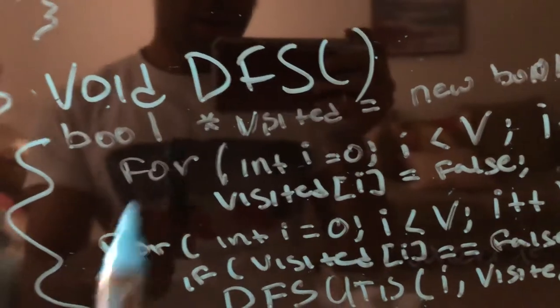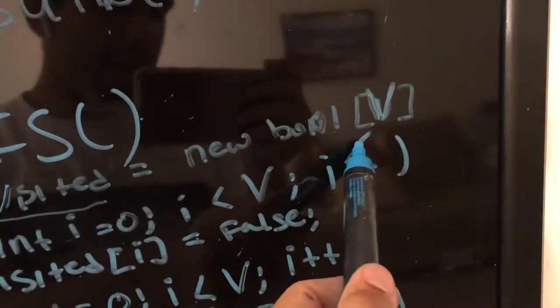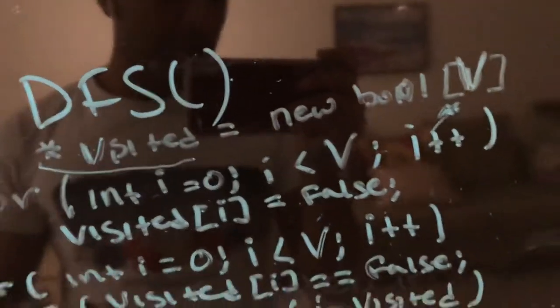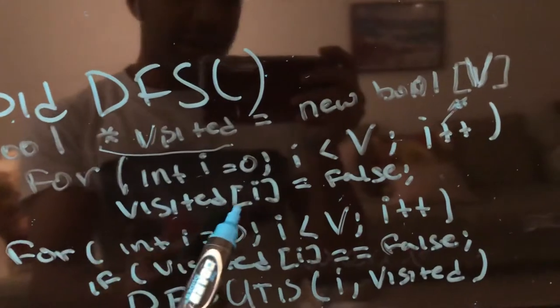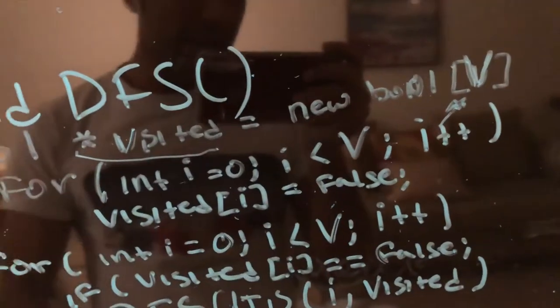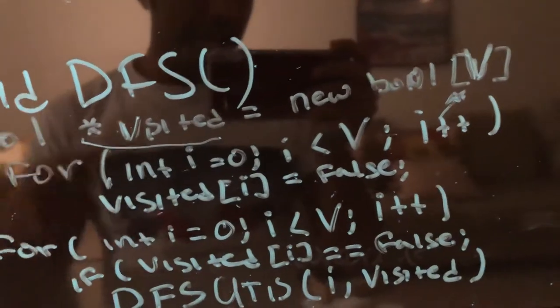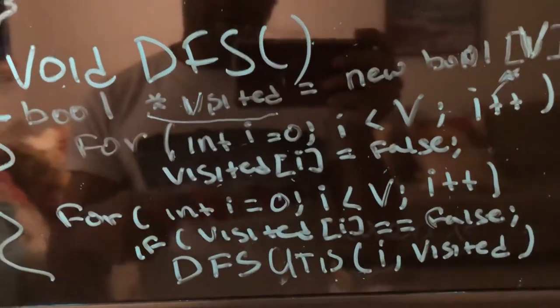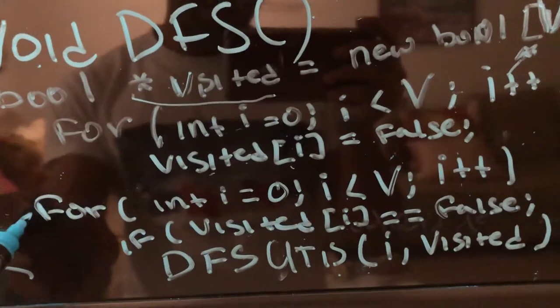Right here, what this DFS function mainly does, it creates a new unvisited boolean. So if you actually take a look at it here, you have creates a boolean pointer. It makes it over here a V. And this is actually a big V. Because that is how many vertices are in there, which is 4.